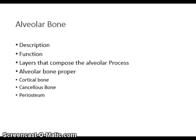The alveolar bone is the bony projection that surrounds and supports the teeth. Its function is to form the bony sockets of the teeth and to provide protection and support. It is composed of cortical bone, cancellous bone, the alveolus, alveolar bone proper, and the periosteum. Cortical bone forms the outside walls of the mandible and the facial and lingual aspects of the maxilla. It is thicker in the molar region than in the incisor region. Two defects that can occur are fenestration and dehiscence.